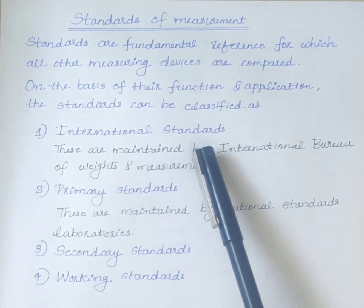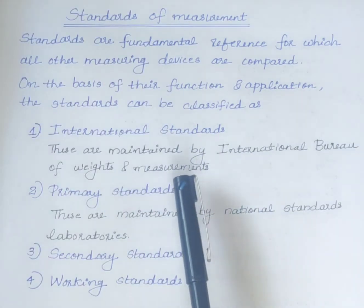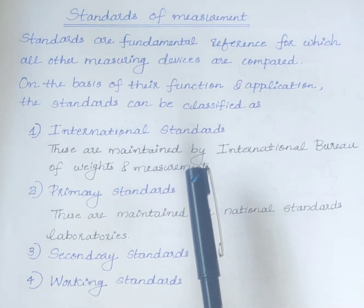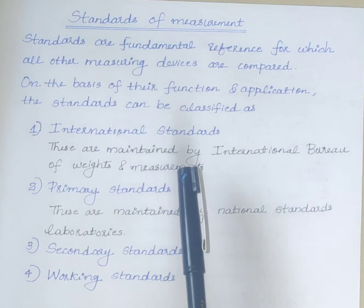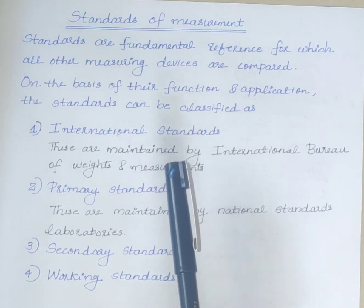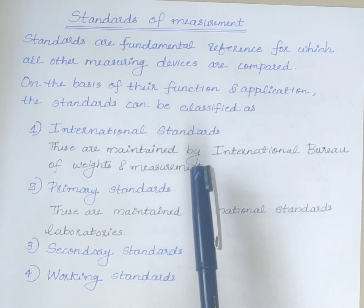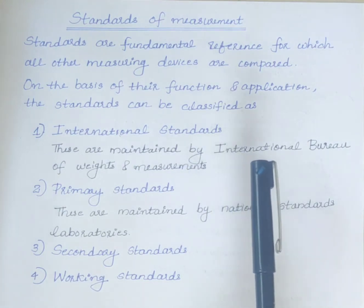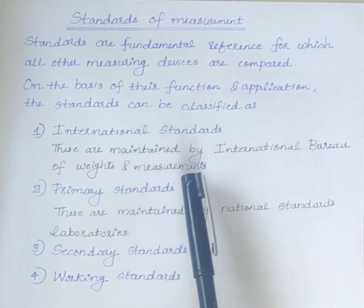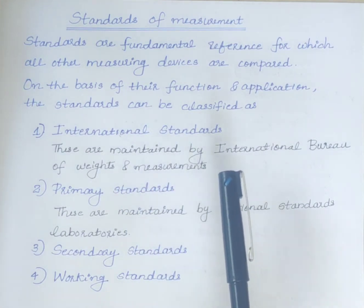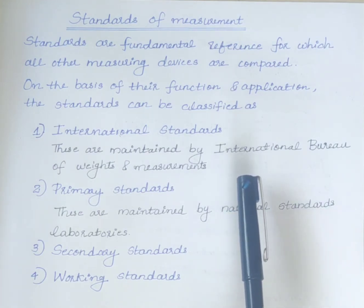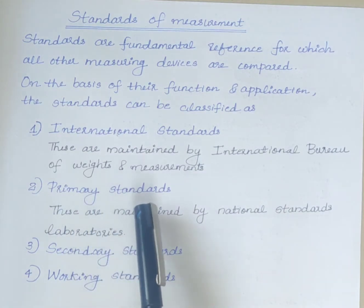First, we will discuss international standards. International standards are defined on the basis of international agreement. They represent the units of measurement which are closest to the possible accuracy with the present day technological and scientific methods. International standards are maintained at the International Bureau of Weights and Measurements and are not available to the ordinary user of measuring instruments for the purpose of calibration.